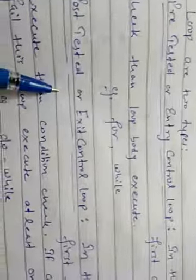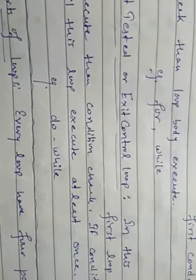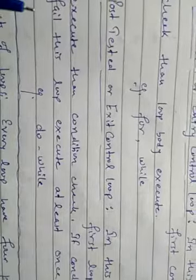The other type is post-tested, also called an exit control loop. In this loop, the loop body executes first, then the condition is checked. So if the condition fails, this loop executes at least once — because after the first iteration, the condition is checked. The example of this is do-while.